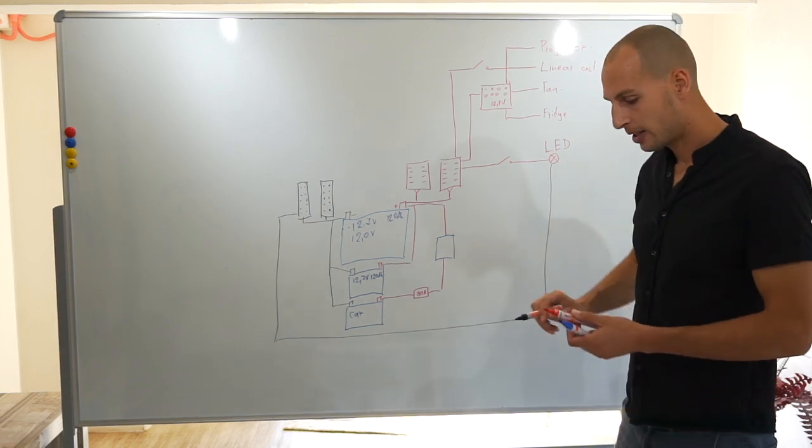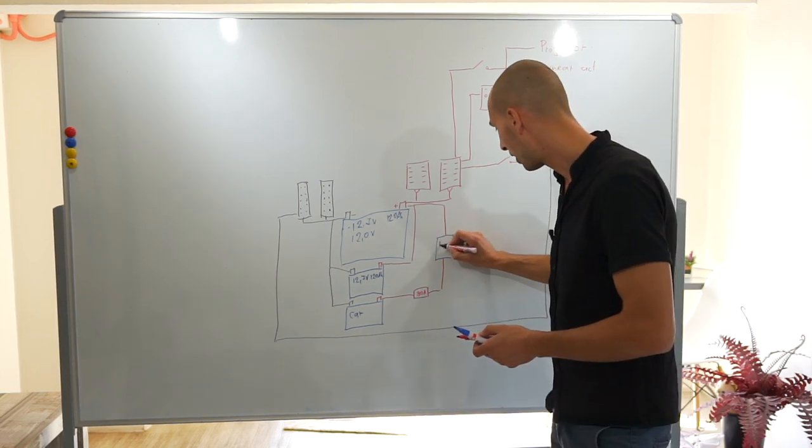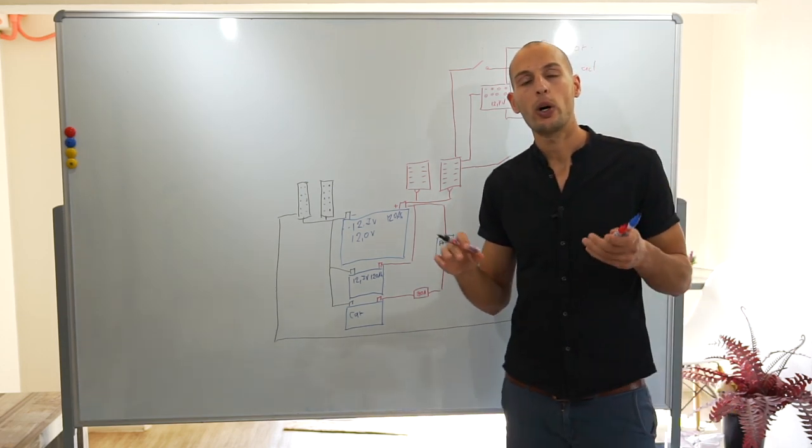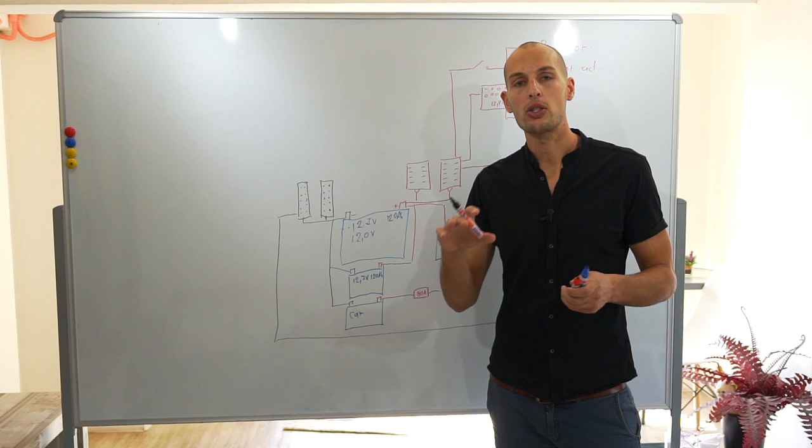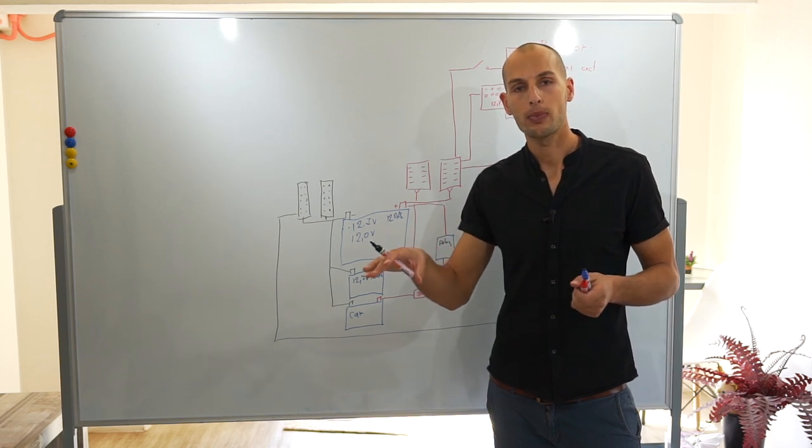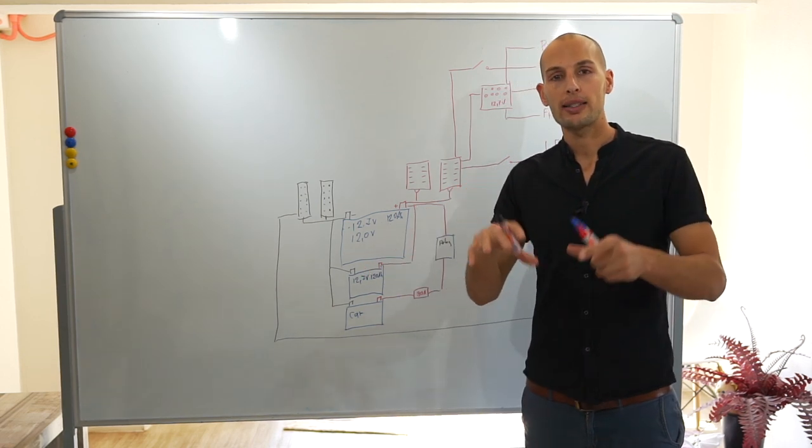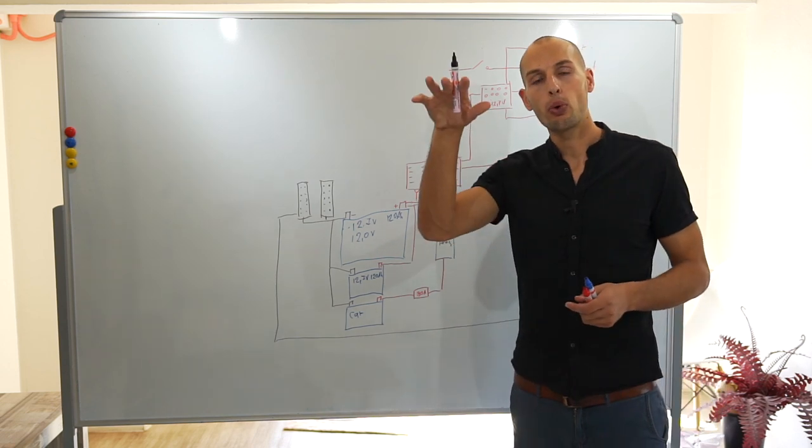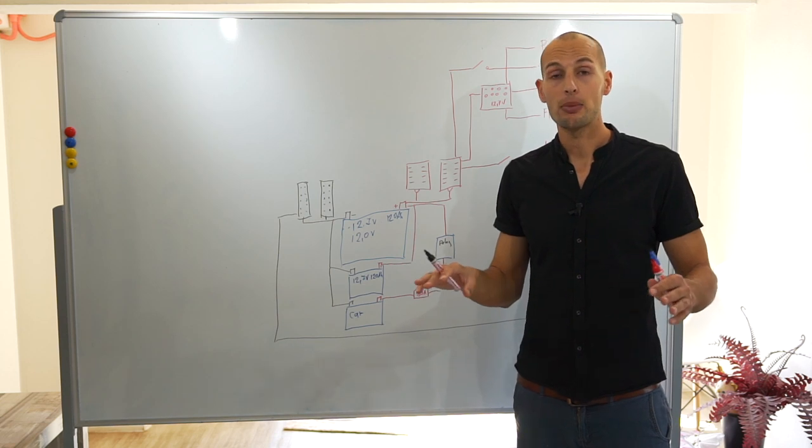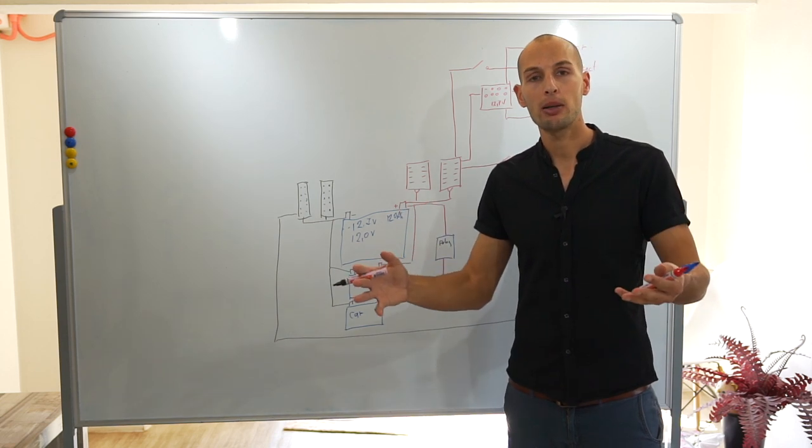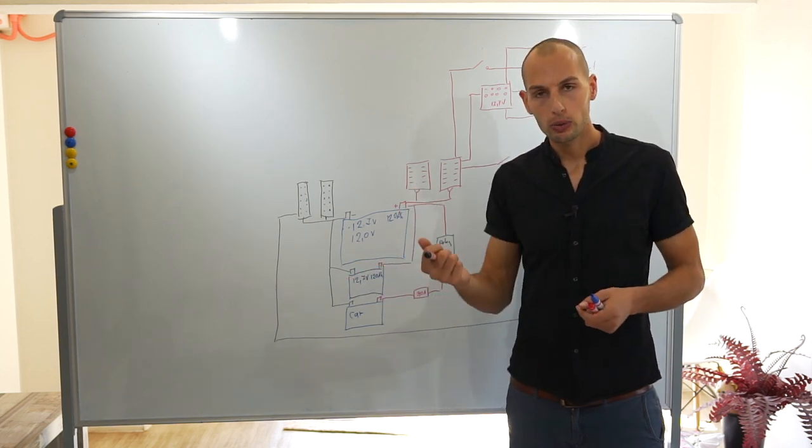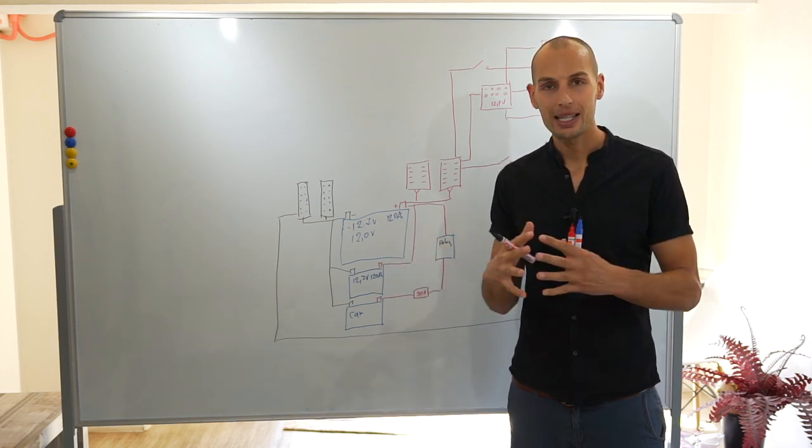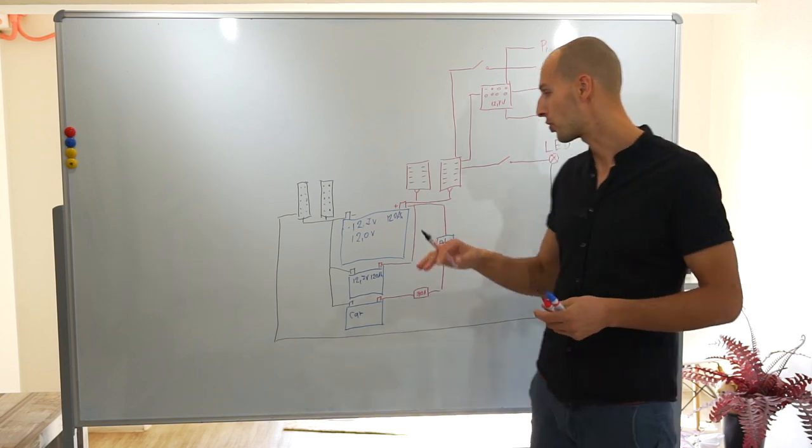So this thing is called a relay, and what it does: when you have a fully charged battery that is 12.7 volts, it connects these batteries together. It connects them, and once the voltage drops it disconnects them. That's an amazing system because once you drain them it disconnects, and immediately when you turn the car on and start charging it connects them together and starts charging them all. Absolutely perfect.